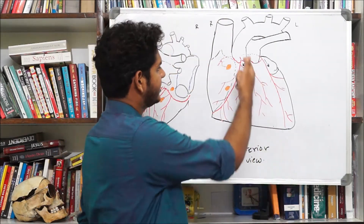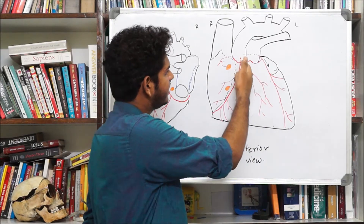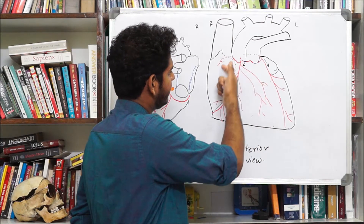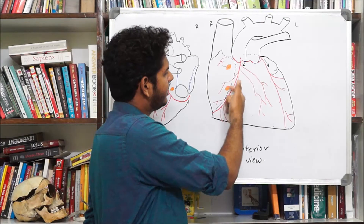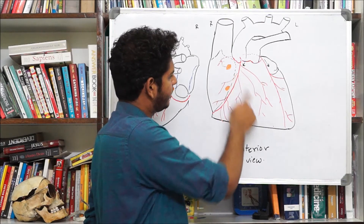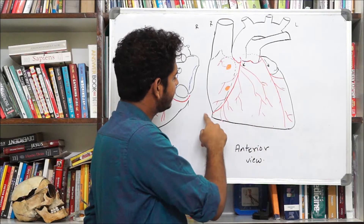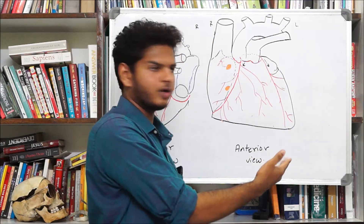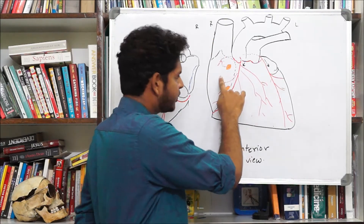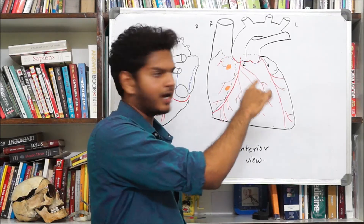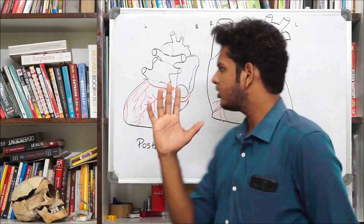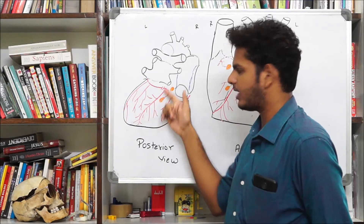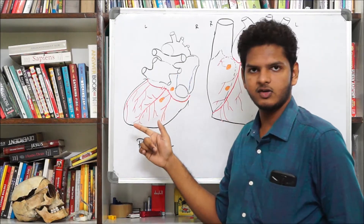Quick revision: the right coronary artery arises from the anterior aortic sinus, gives the conus branch forming the annulus of Vesalius, then atrial branches supplying the SA node, then descending branches giving ventricular and atrial branches anteriorly, marginal branches along the heart's margins, and posteriorly: the posterior ventricular branch, AV nodal branch, and posterior interventricular branch — five anterior and three posterior branches.